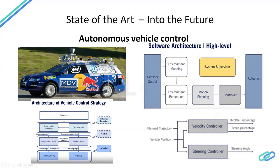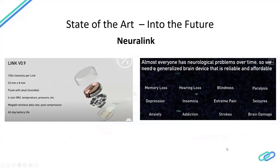In autonomous control there are various modules: mapping, perception, motion planning — all of which feed information to the controls layer as a speed profile or path to follow. For example, steering activation happens automatically in autonomous control. This is the Google car and the Stanford car — among the first autonomous vehicles built and tested on real roads — which used this kind of architecture where controls plays a very significant role.